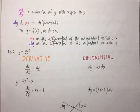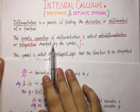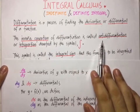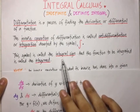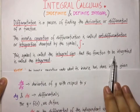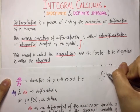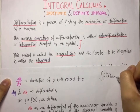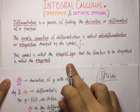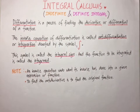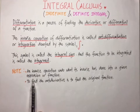Remember that the process of finding the derivative is differentiation. The inverse operation of differentiation is called anti-differentiation or integration, denoted by the integral sign. This symbol is what we call the integral sign and the function to be integrated is called the integrand. For example, the integral of f prime of x dx — f prime of x dx is the integrand and the elongated S symbol is the integral sign. Take note that an inverse operation undoes what its inverse has done to a given expression or function.